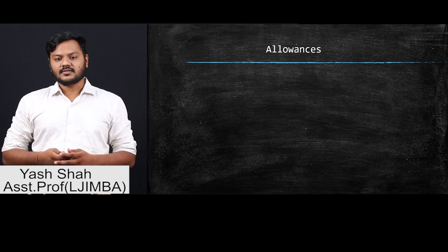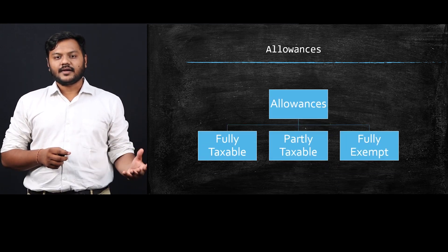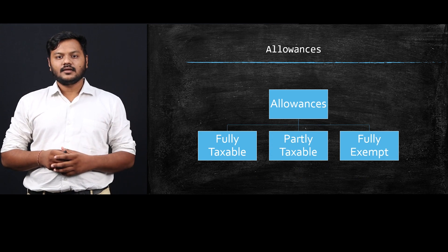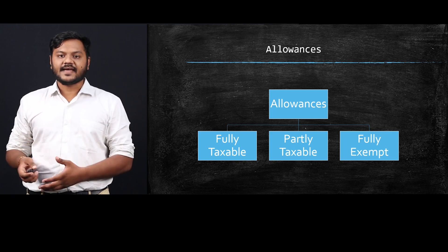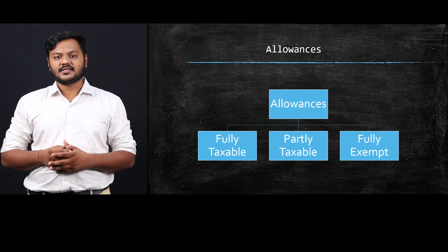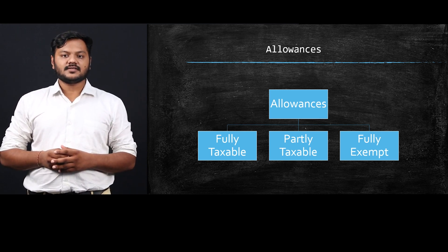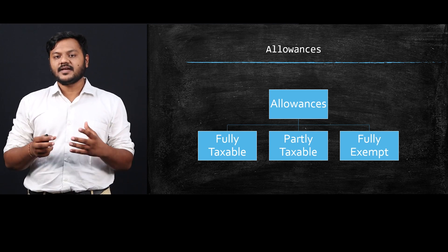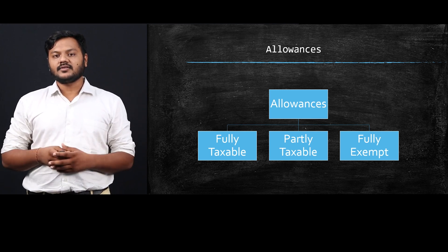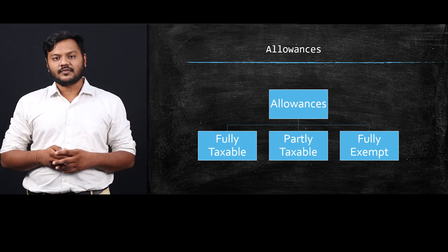Allowances are bifurcated into three parts: first, fully taxable; second, partially taxable; and third, fully exempt. Fully taxable allowances are completely taxable on salary. Partially taxable allowances are taxable but subject to certain conditions. Fully exempted allowances are not taxable at all, irrespective of the amount of allowances given by the company.